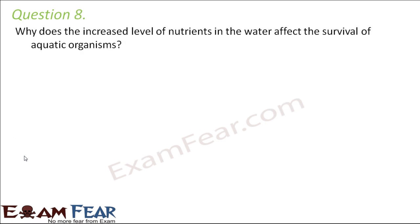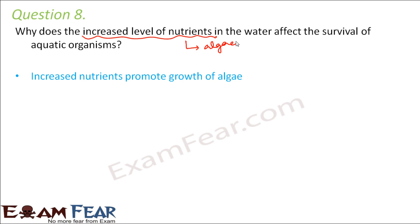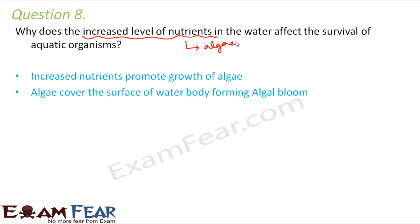Question number 8: Why does an increased level of nutrients in the water affect the survival of aquatic organisms? If the nutrient level increases, it supports the growth of algae. A lot of algae starts growing, which results in an algal bloom.